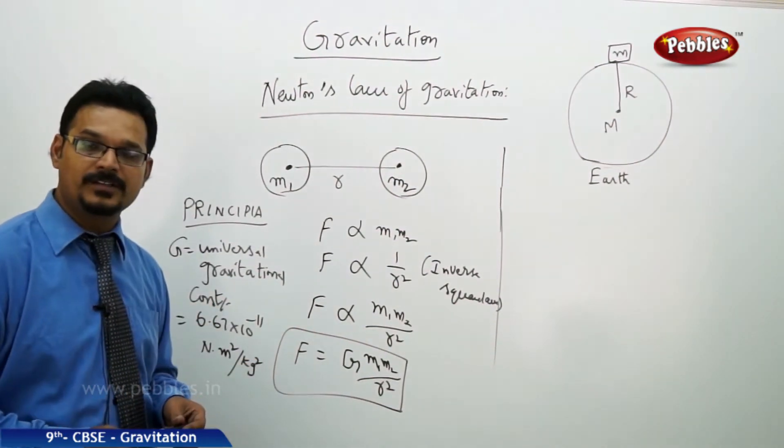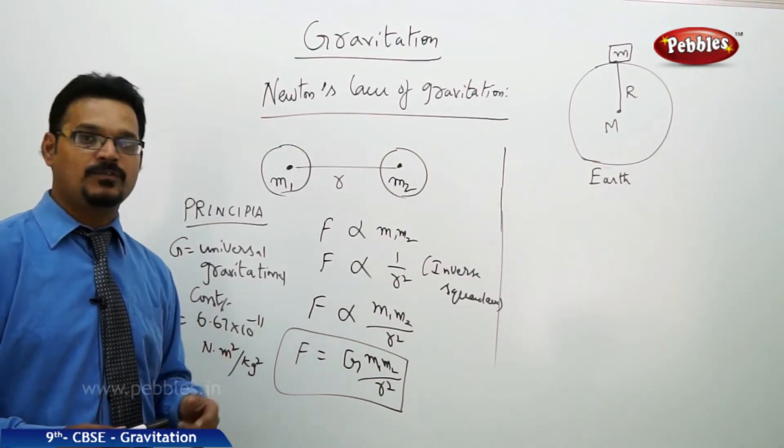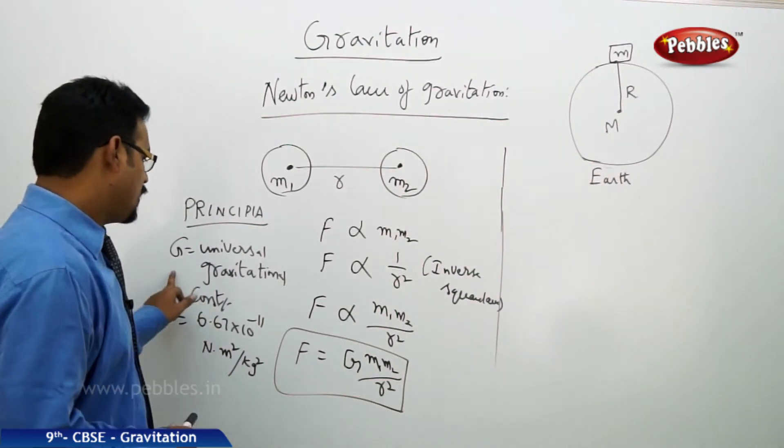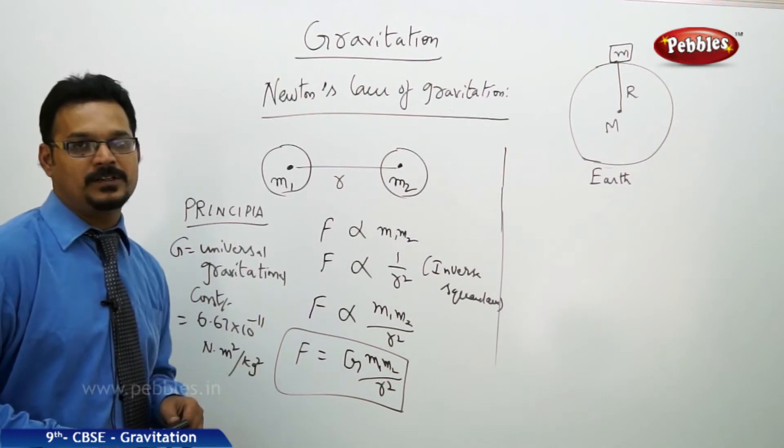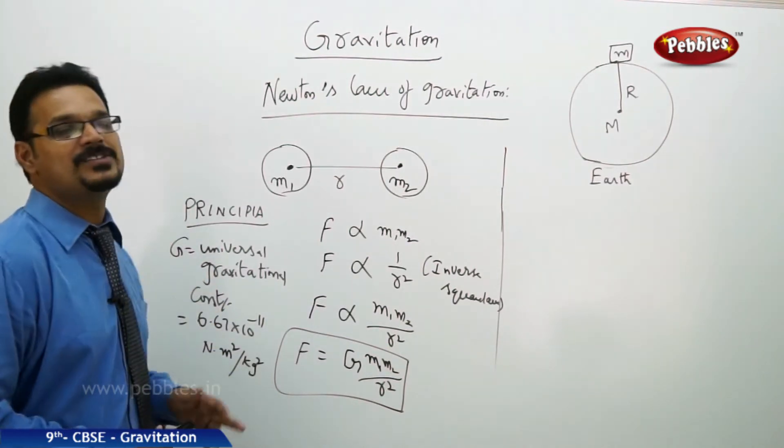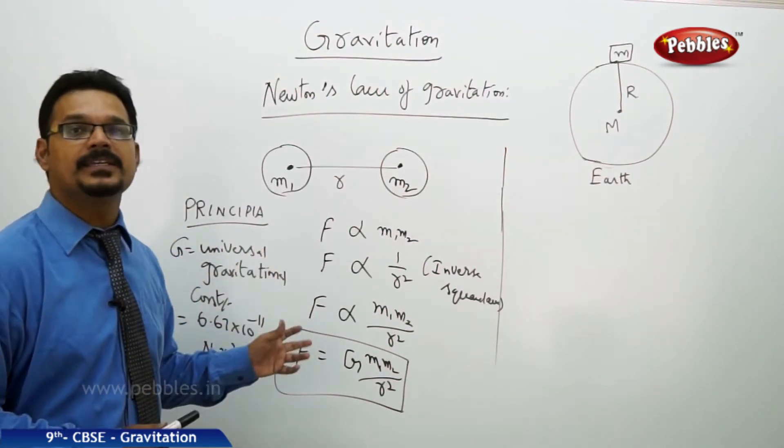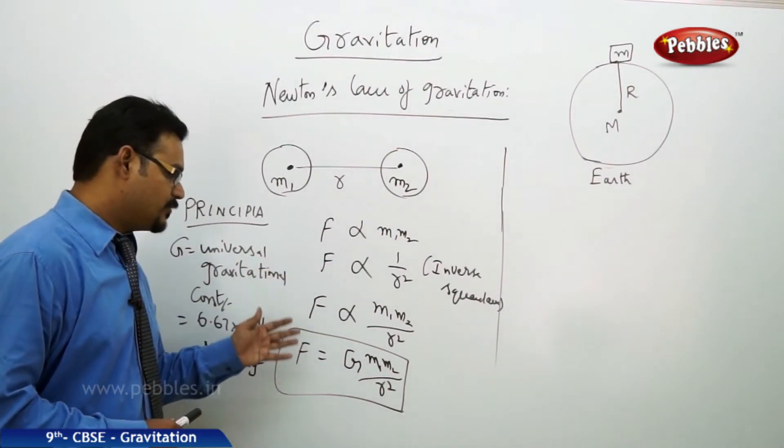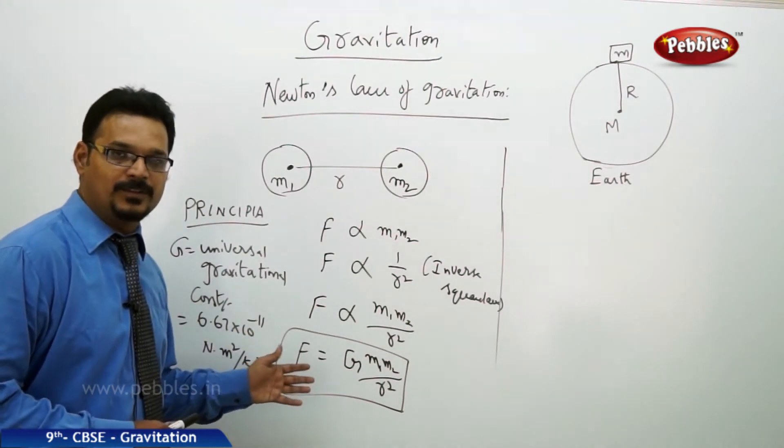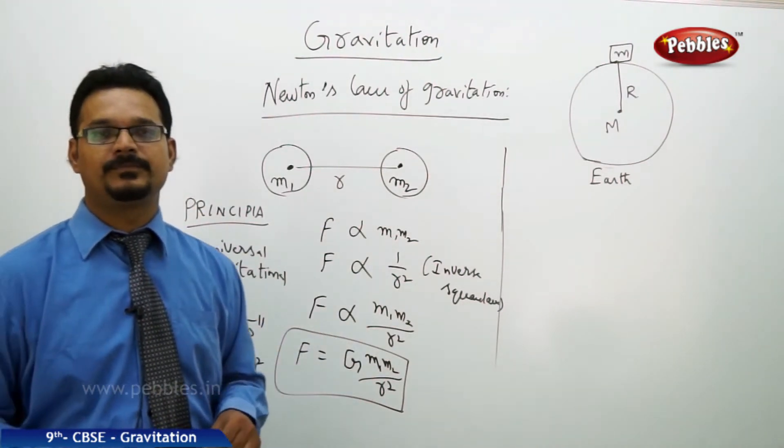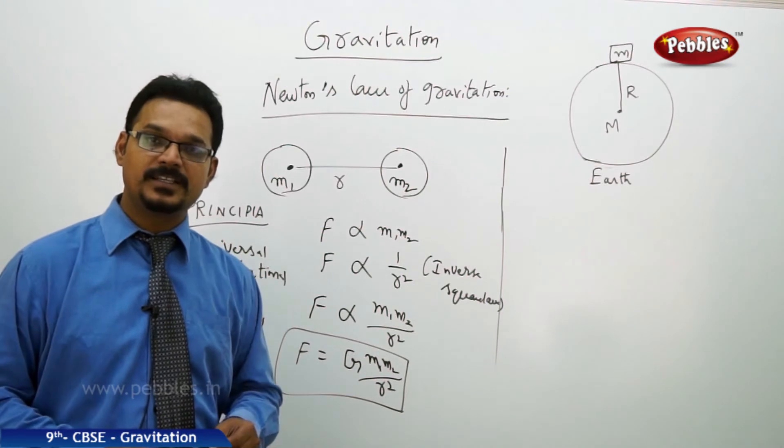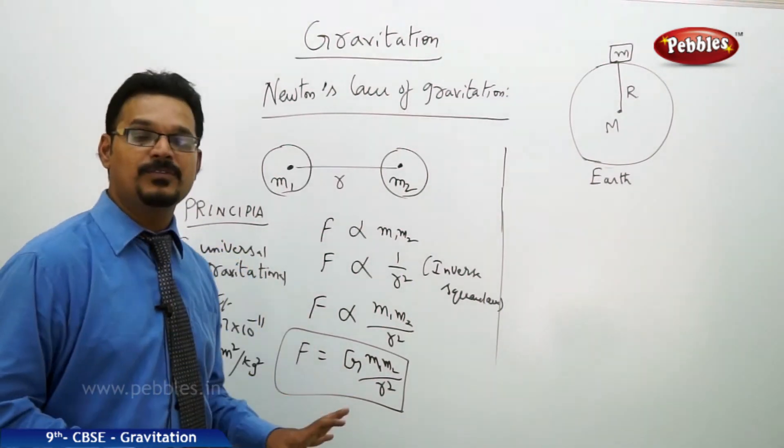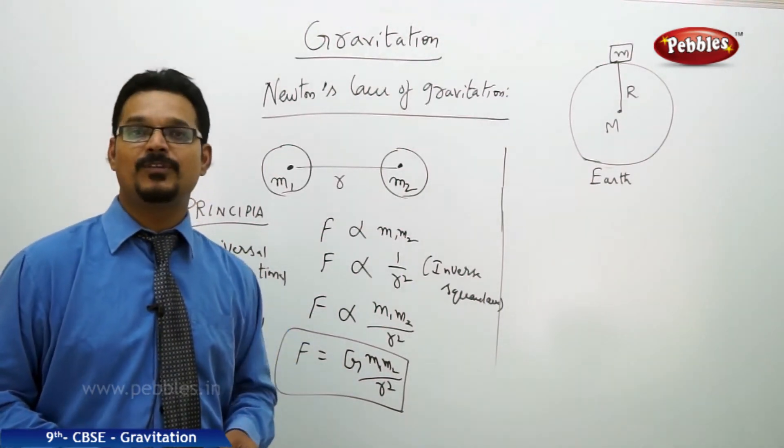But you should ask a question: why is G called universal gravitational constant? Why is it not just called a gravitational constant? Here is the importance of this law. Isaac Newton derived this formula for the bodies on the Earth.